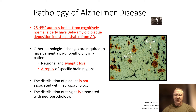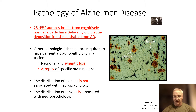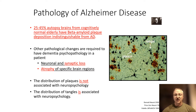But for you to have a clinical dementia syndrome you need other things. You need neuronal loss, synaptic loss, and then resultant atrophy. The distribution of plaques is not associated with neuropathology, but the distribution of tangles is associated with the regions of the brain that seem to be malfunctioning, and that's how it presents clinically.